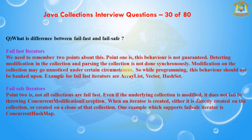For fail-safe iterators, note that not all collections are fail-fast. Even if the underlying collection is modified, it does not fail by throwing ConcurrentModificationException. When an iterator is created — either directly on the collection or on a clone of the collection — it continues to work. One example that supports a fail-safe iterator is ConcurrentHashMap.